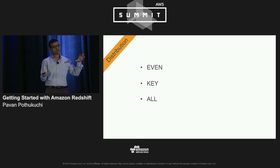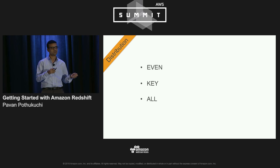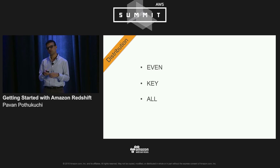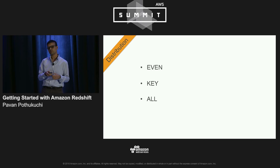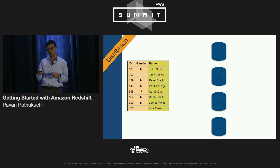Distribution keys control how data gets distributed across compute nodes. We have three types of distribution: even-based, key-based, and all. Let's look at how each of these works.